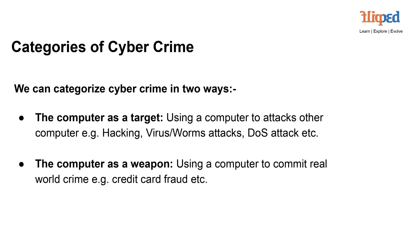Let's now delve into the different categories of cybercrime, which can be categorized in two distinct ways. The first category involves using a computer as the target, where an attacker uses a computer to launch attacks against other computers or systems. This includes activities like hacking, virus and worm attacks that infect and propagate through networks, and denial-of-service attacks, which flood a system with traffic to render it inaccessible.